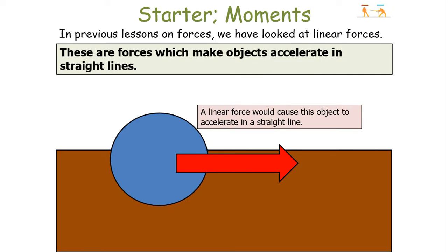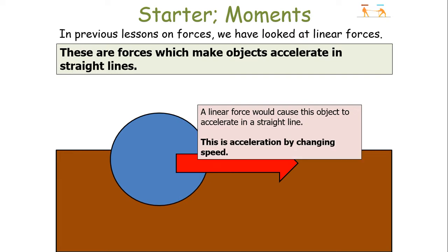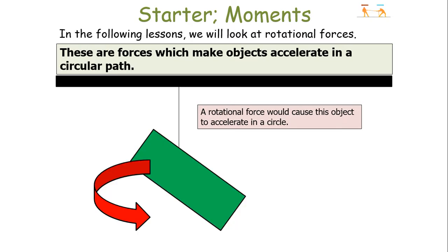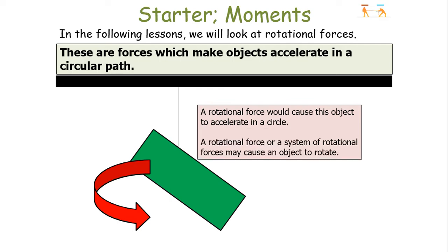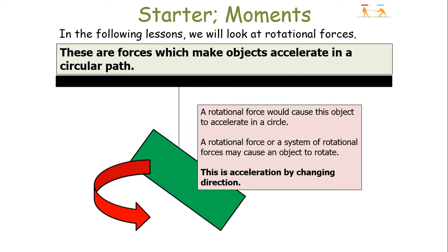In previous lessons we've looked at the effect of linear forces — forces that make objects accelerate in straight lines. A linear force will cause an object to accelerate in a straight line by changing speed. A rotational force, on the other hand, will cause an object to accelerate in a circular path, and this acceleration is by changing direction.